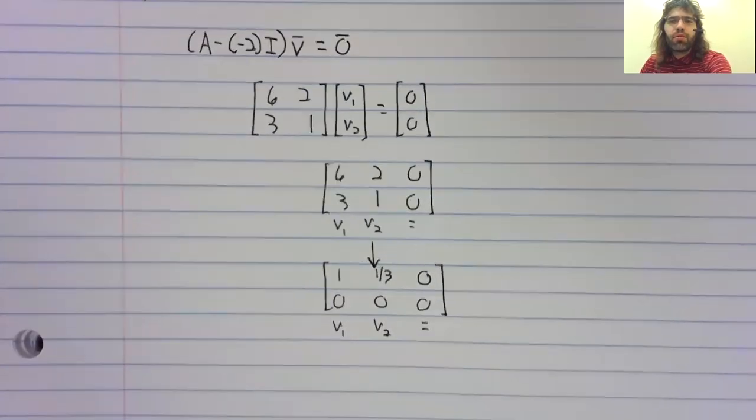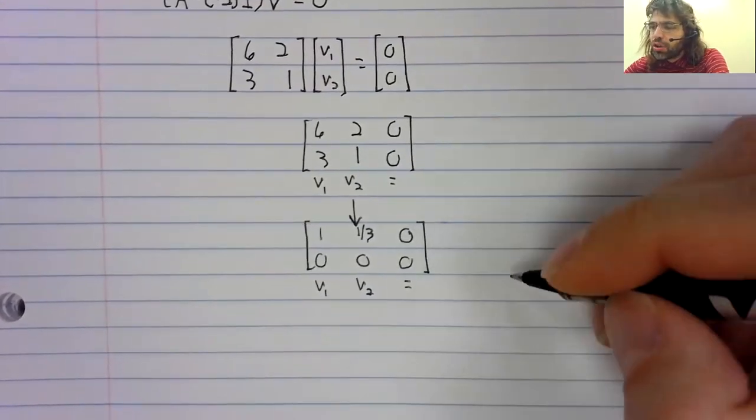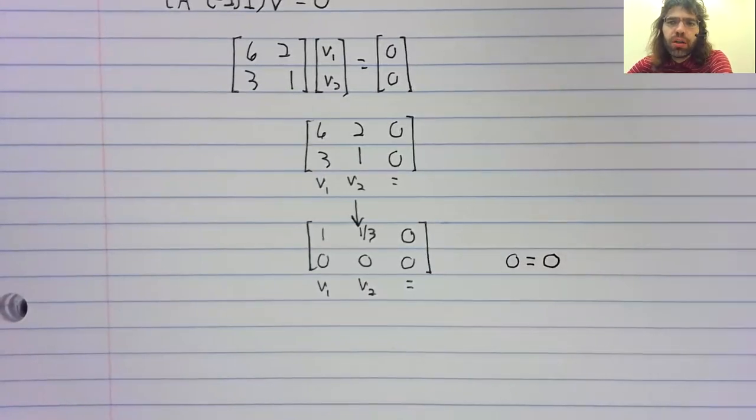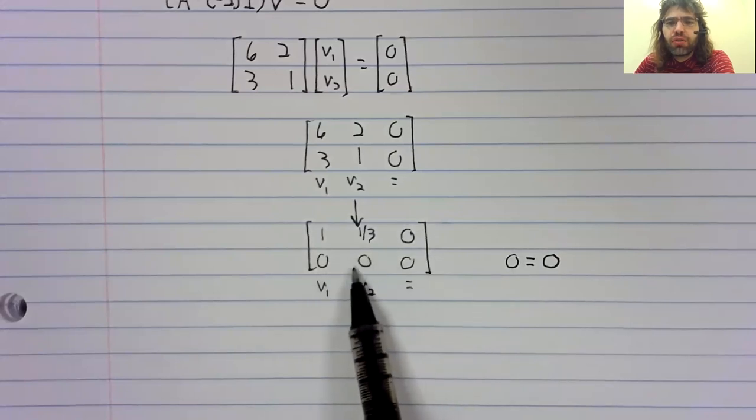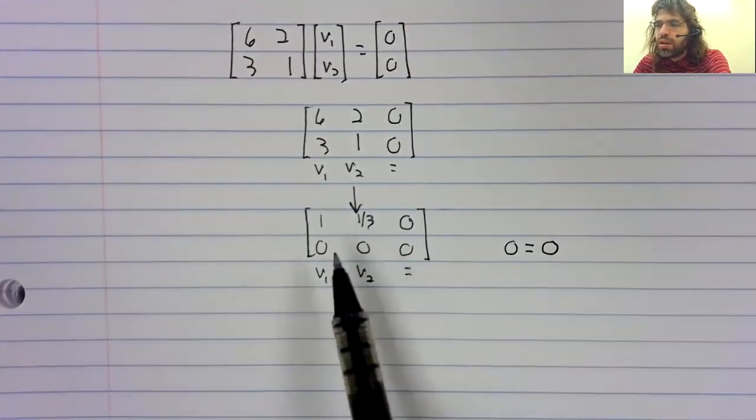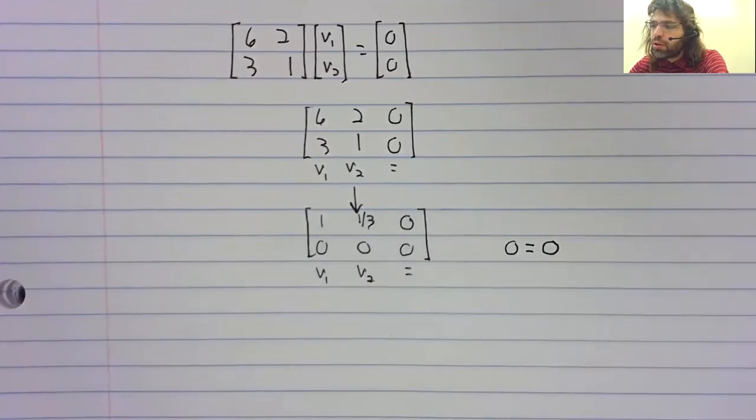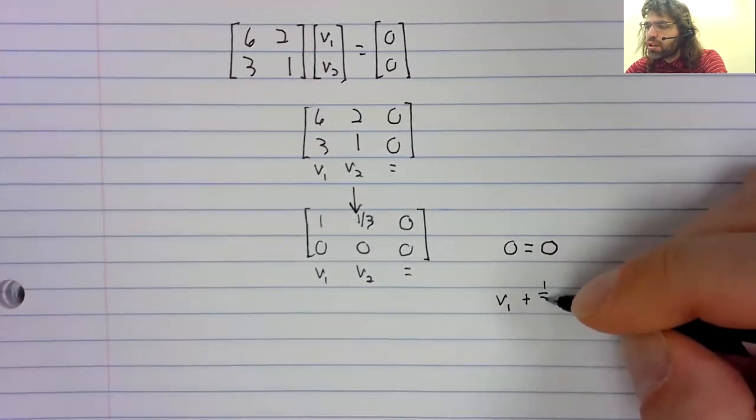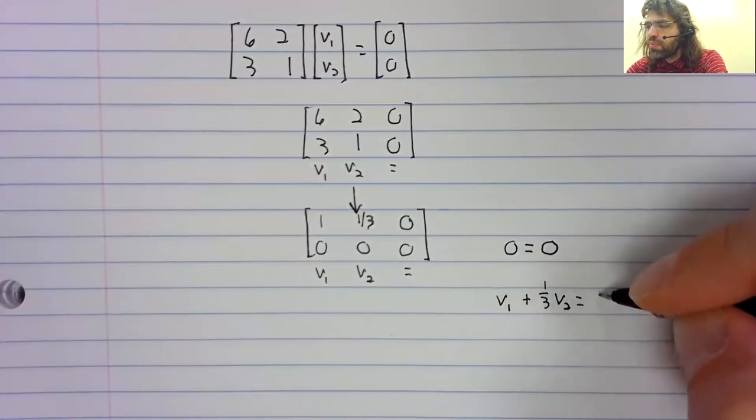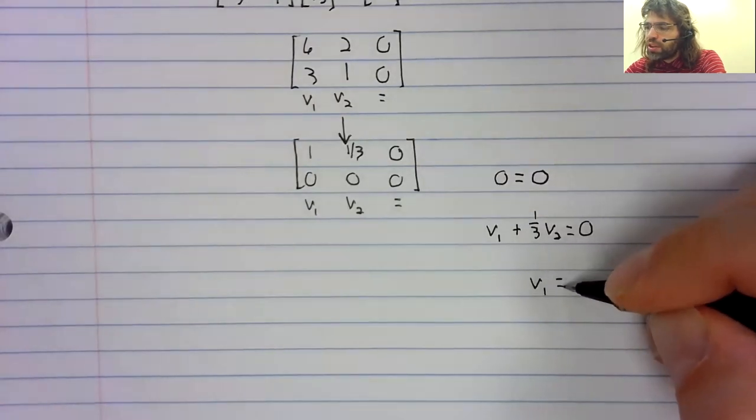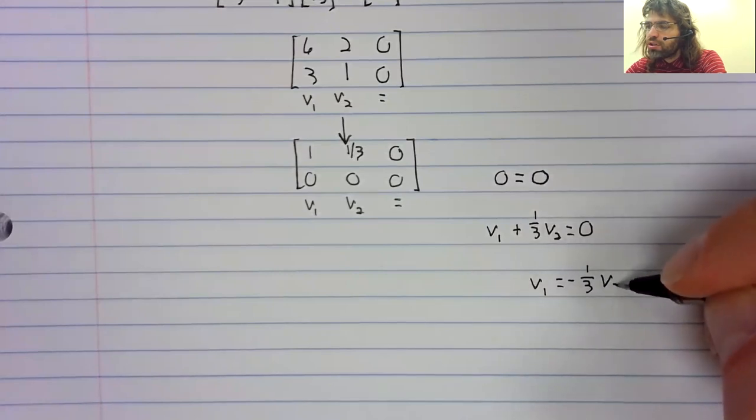When we're finding eigenvectors, we should always get at least one of these useless zero equals zero statements. If we don't, something's gone wrong. This row, however, tells us something concrete that v one plus one third v two equals zero. So v one equals negative one third v two.